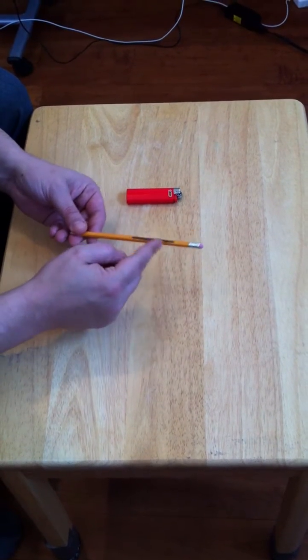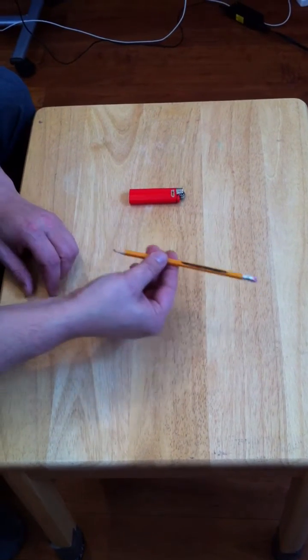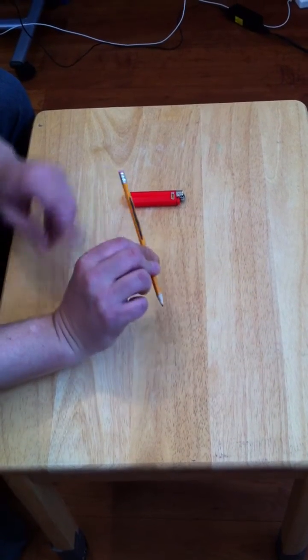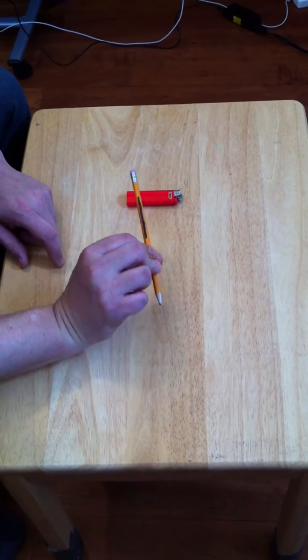I took a sharpie marker and I made a black line on this pencil so you'd be able to see it. I made it on this side. I also made it on this side here and you see quite clearly that it's there.